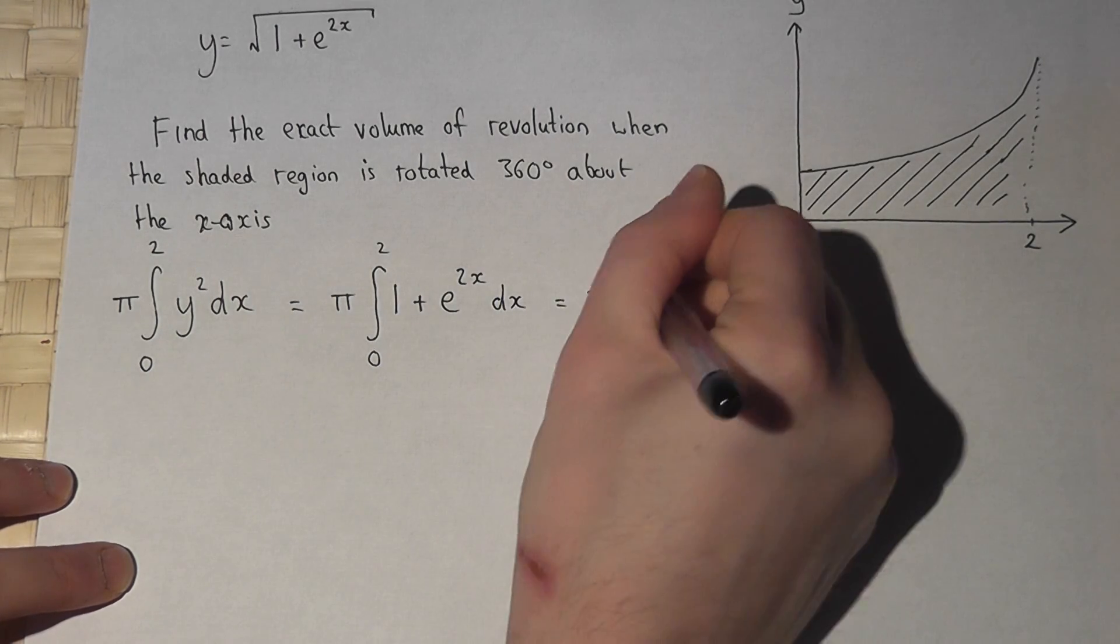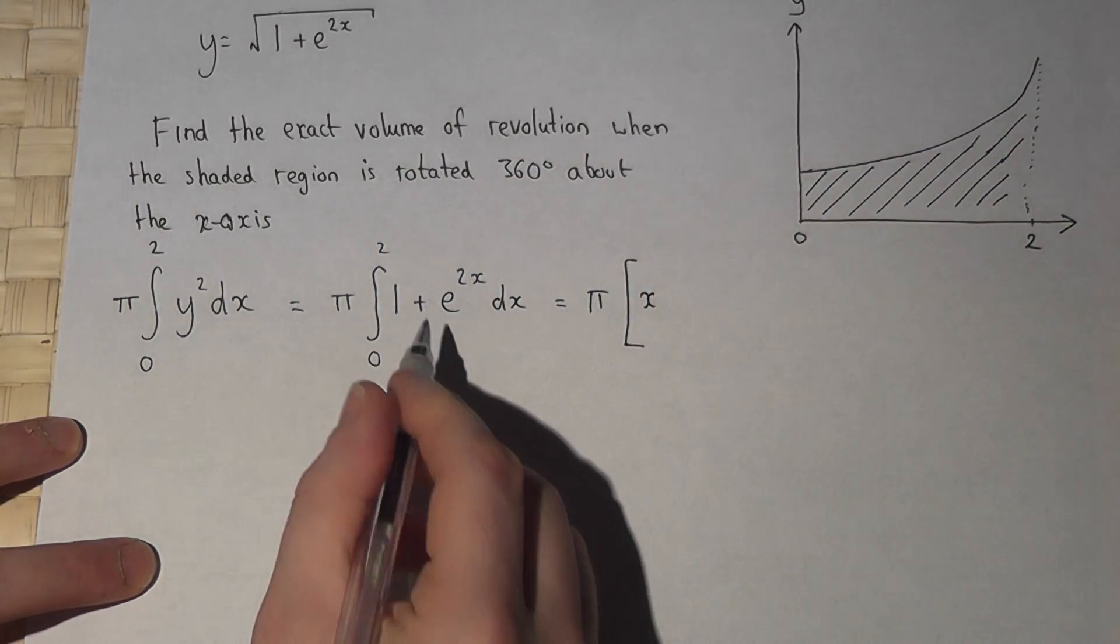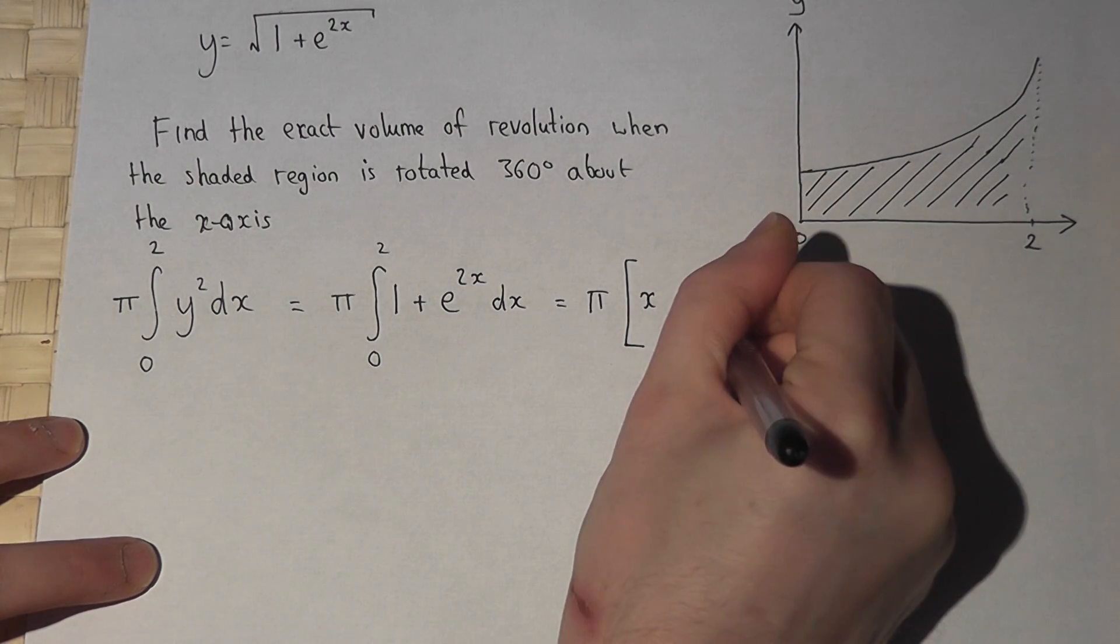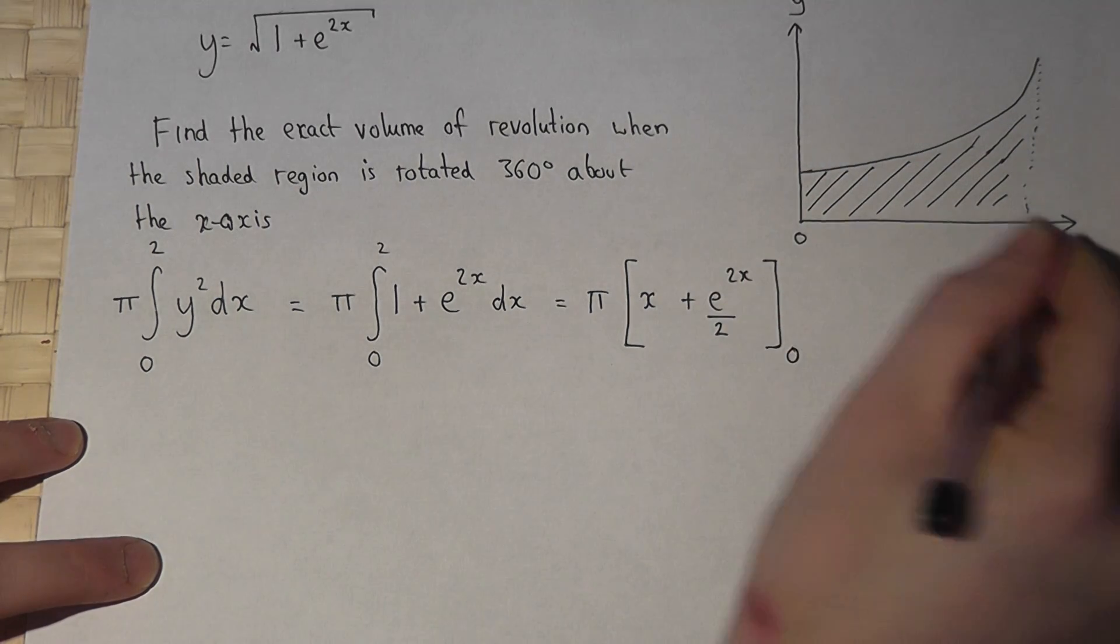So pi times, 1 integrates to x, but e to the 2x integrates to e to the 2x all over 2, and that's between 0 and 2.